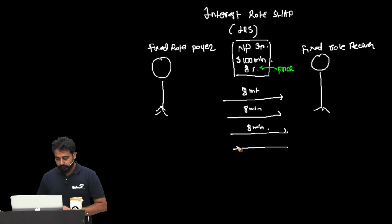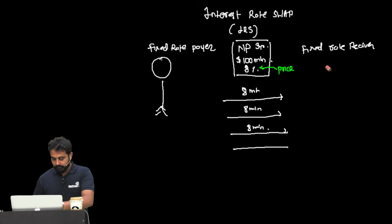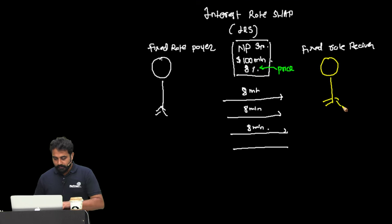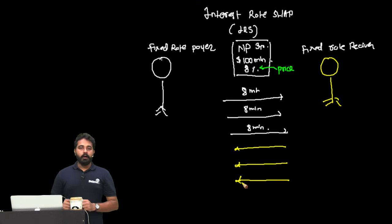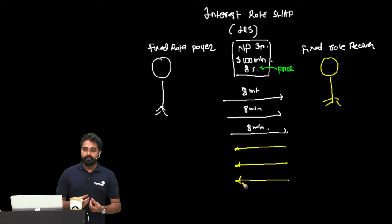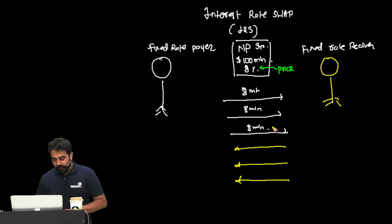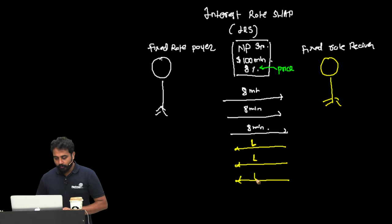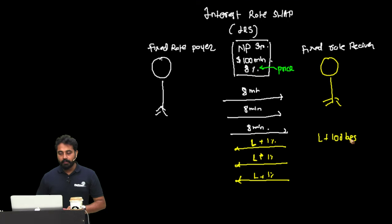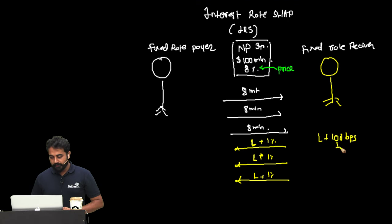Every year the other party will pay a floating rate back. It's an exchange of fixed rate with floating rate. One popular benchmark for the floating rate is LIBOR. So every year this party will pay LIBOR plus 1%. Instead of saying 1%, I could also say 100 basis points — it's the same thing. So if I say LIBOR plus 100 bips, you understand it is LIBOR plus 1%. 100 bips is the same as 1%.